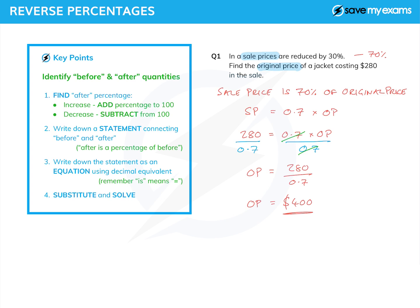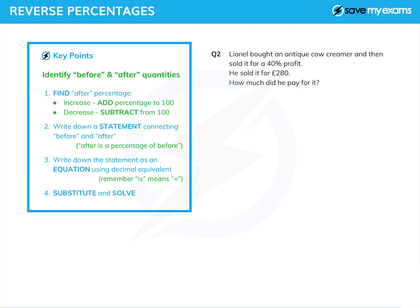Let's try one more. Lionel is buying an antique cow creamer, and he sold it for a 40% profit. So we have a selling price and a buying price. The after percentage — it's a profit, so it's an increase — is 140%. Our statement is: his selling price is 140% of the buying price.